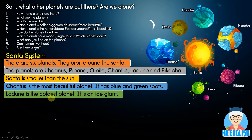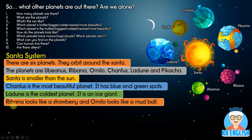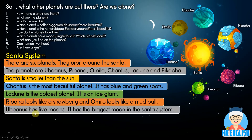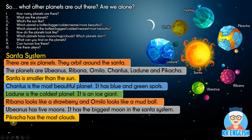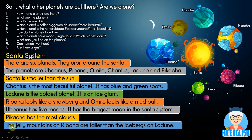La Dune is the coldest planet — it is an ice giant. Ribbana looks like a strawberry. Omylo looks like a mud ball. Ubenus has five moons, and it has the biggest moon in the entire system. Picaccia has the most clouds. The jelly mountains on Ribbana are taller than the icebergs on La Dune.